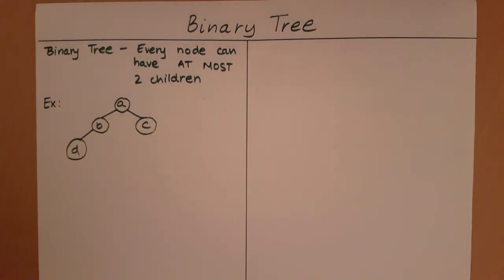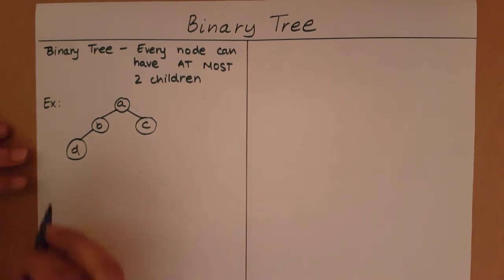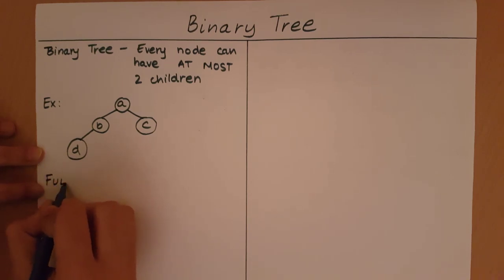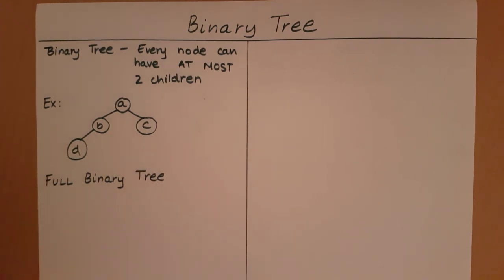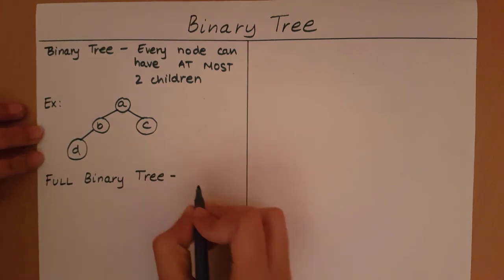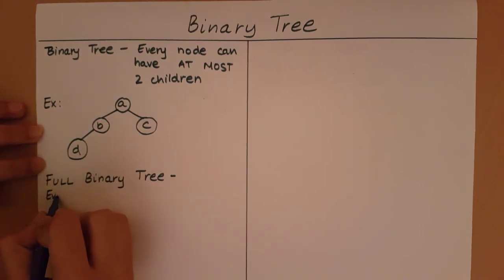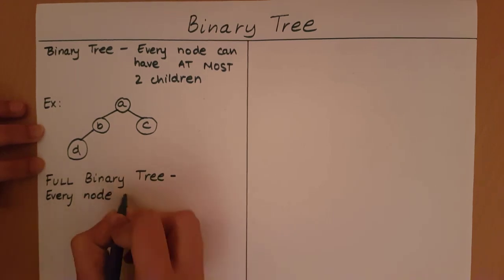There are different variations of a binary tree. A full binary tree is a binary tree in which every node other than the leaves has exactly two children. So the only acceptable number of children for any non-leaf node is exactly two.